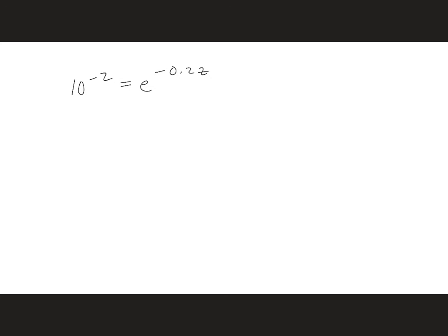So at this point, we can take the natural logarithm of each side to get rid of the exponential term, so we get ln 10 to the minus 2 is equal to minus 0.2 z, and we can solve now for z. Z is 23 meters.